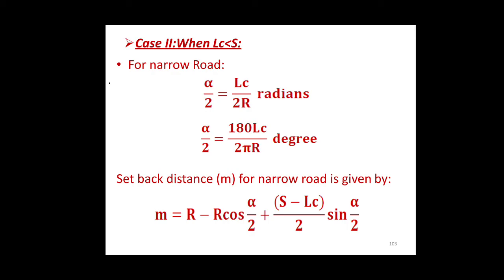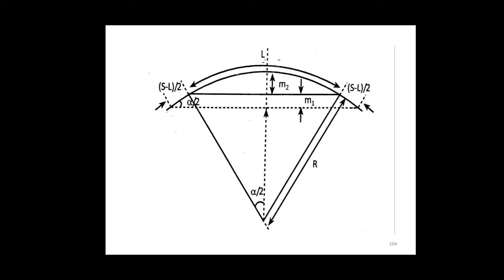The clearance of the obstruction up to the setback distance is important. Where there is a cut slope on the inner side of the horizontal curve, as seen from the figure, the setback distances M1 and M2 together constitute the total setback distance M. In this case, the length of the curve LC is less than the required side distance S, and R is the radius of the curve.